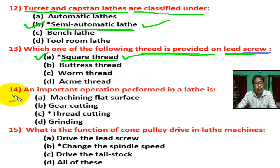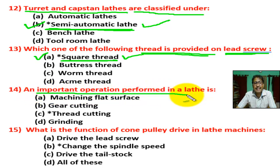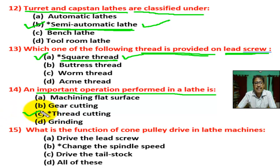Question number 14: an important operation performed in a lathe is? There are four options. Correct answer is C — thread cutting. Thread cutting is the correct answer.